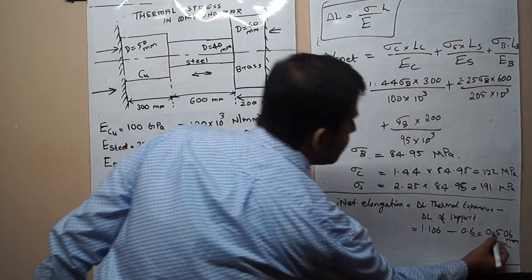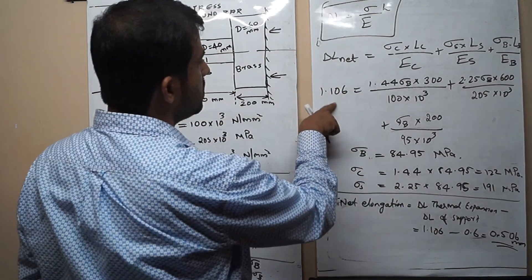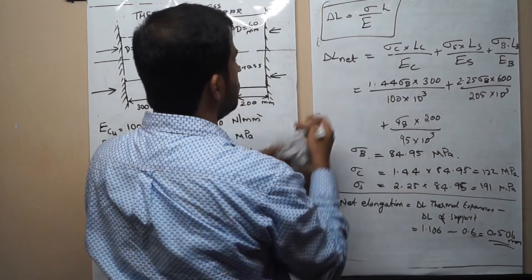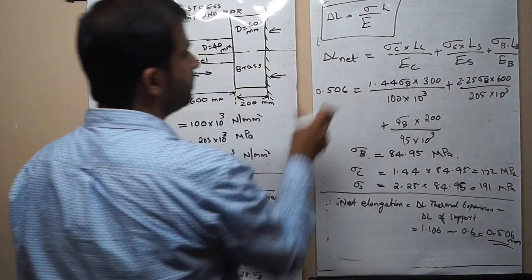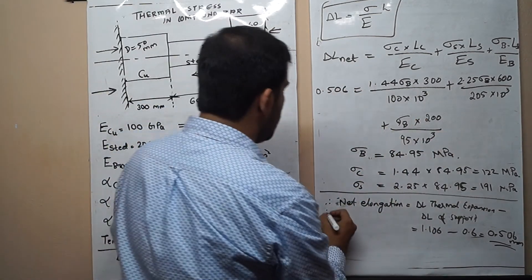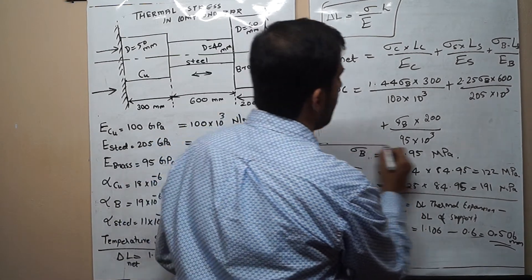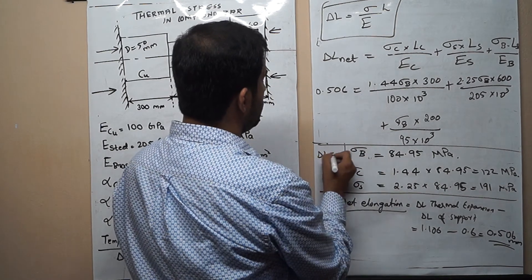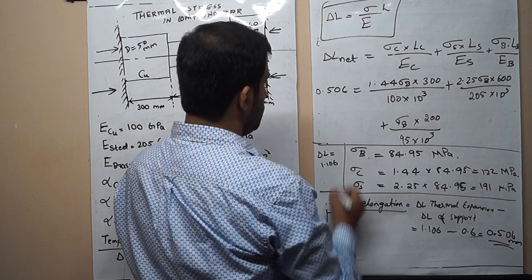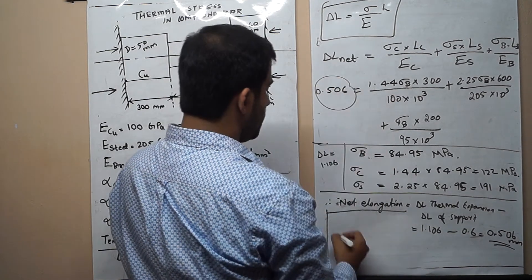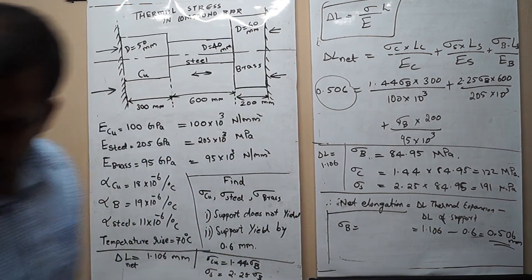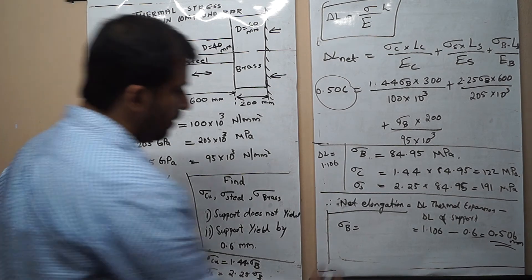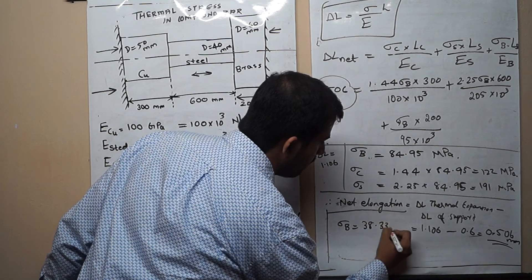Substituting δL = 0.506 mm into the same compatibility equation — instead of 1.106 — we solve for σ_B again. With δL = 0.506 mm, we obtain σ_B = 38.33 MPa.